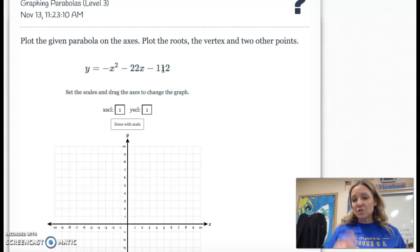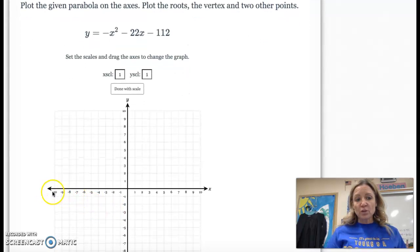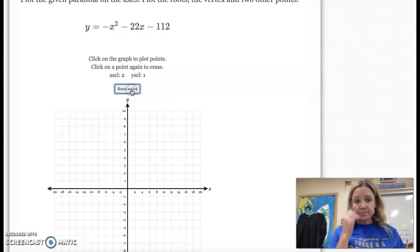Which means if you set each of those equal to zero, you're going to have points on the x-axis at negative 8 and negative 14. If you come down to the graph, you're going to notice it only goes up to negative 12. So you need to scale the x-axis. I'm just going to go by twos and then click done. So it'll go all the way to negative 20. If you need a number in between, you just click halfway.